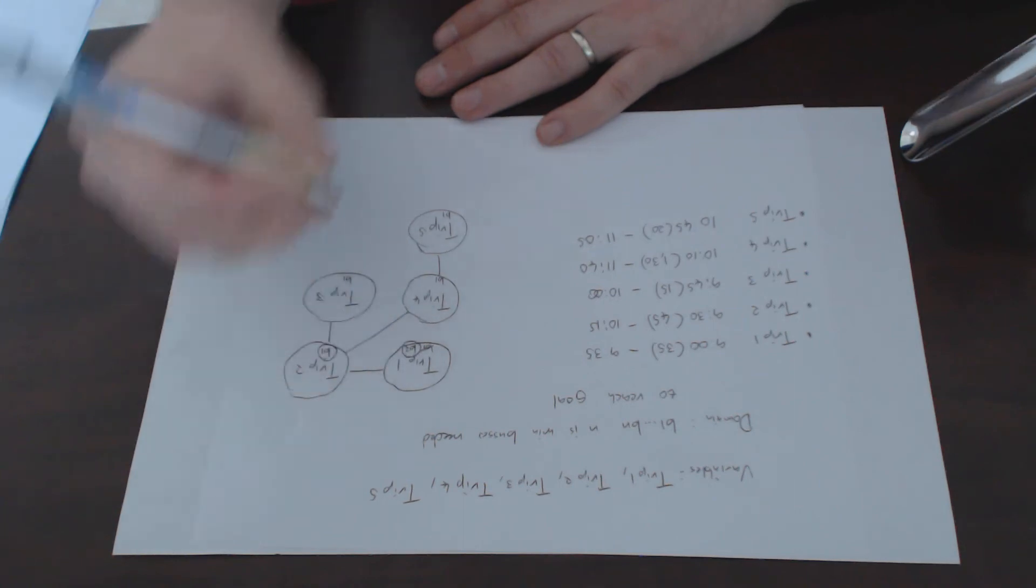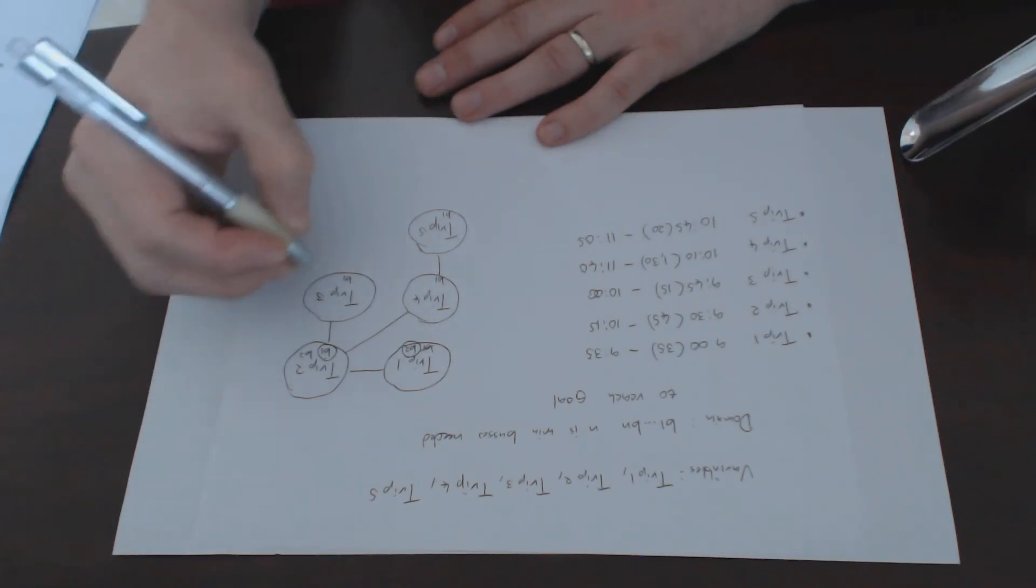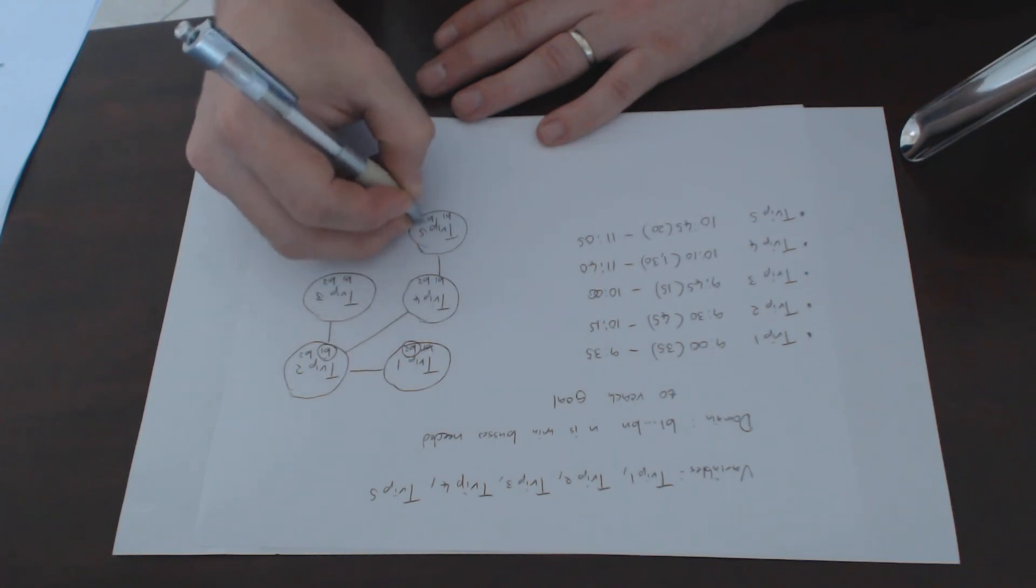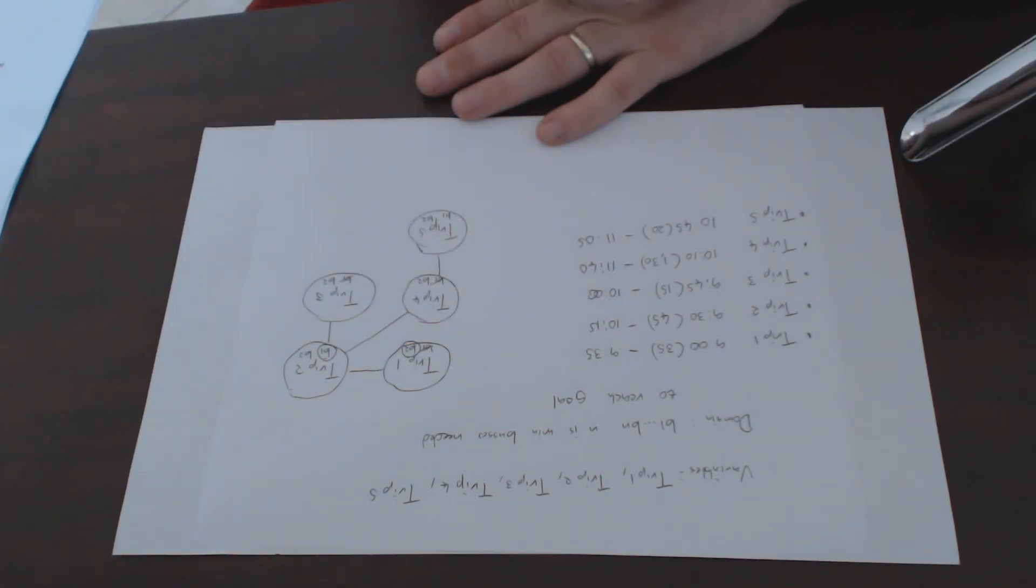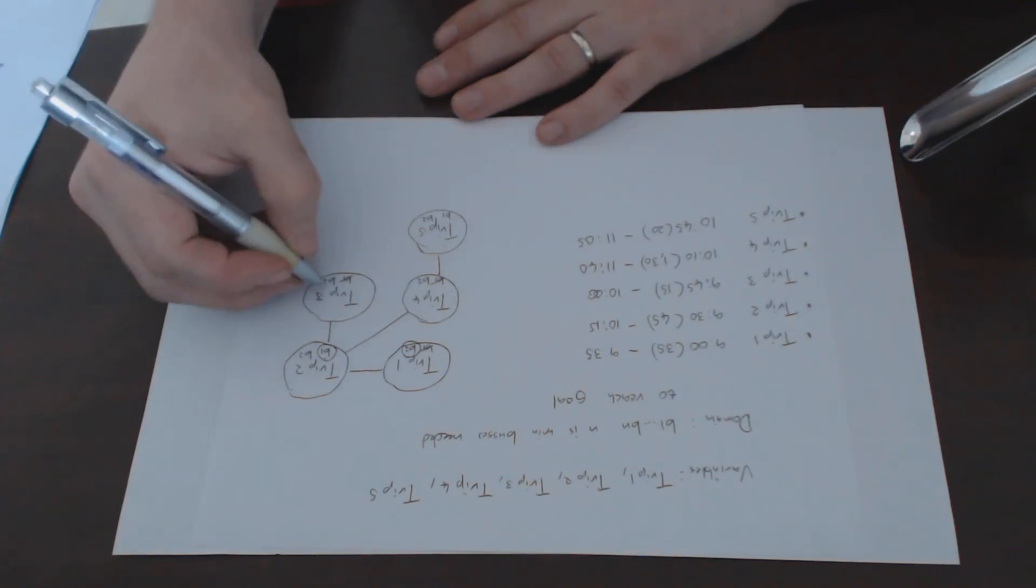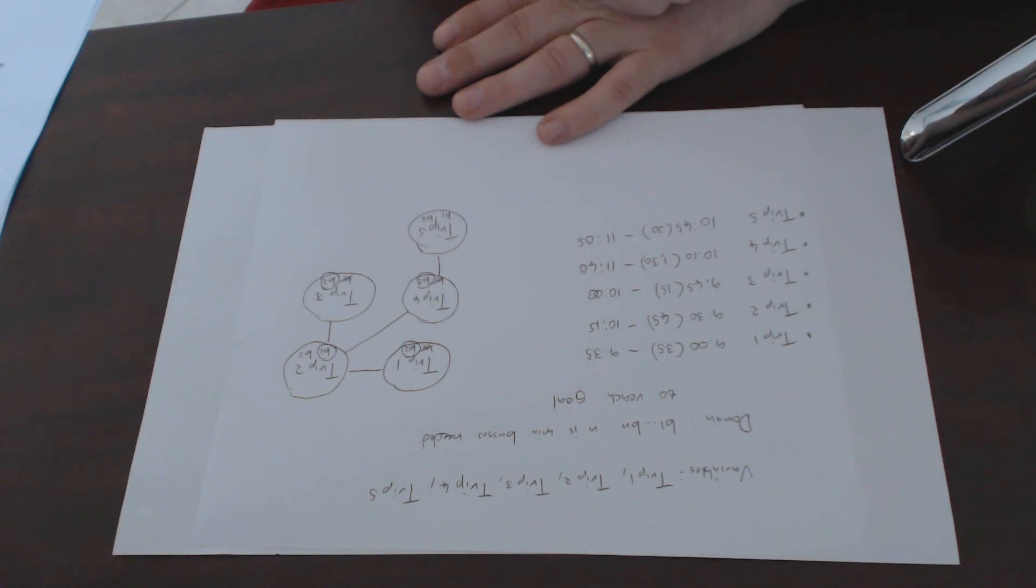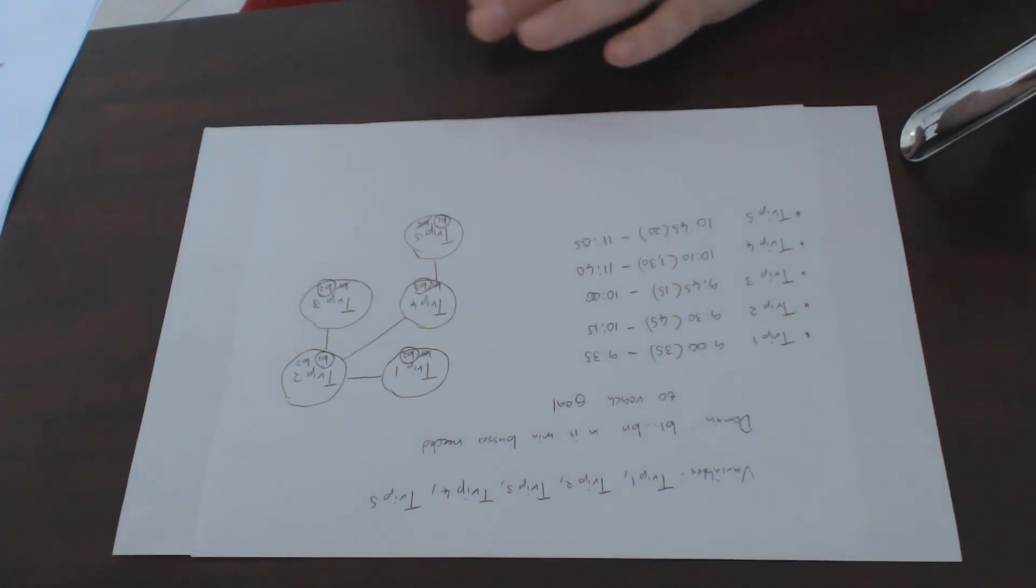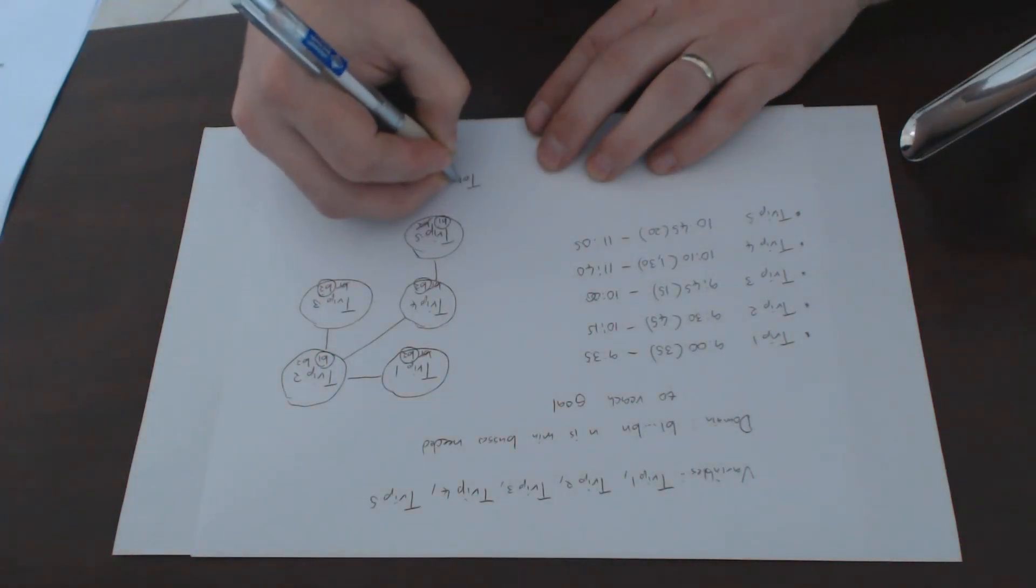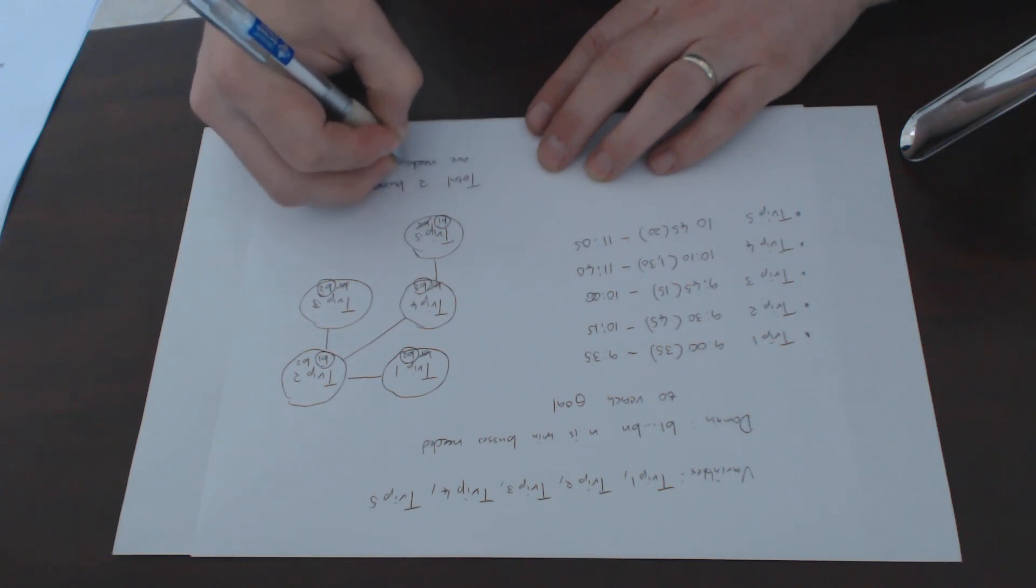If bus1 goes to trip2, we need a bus for trip1 and trip3, so we're going to add bus2. Trip1 can't use bus1, but trip3 could use bus2, and we can see that bus2 is available for trip4. Now because trip4 is using bus2, trip5 can use bus1. So in total, two buses are needed, and that's it.